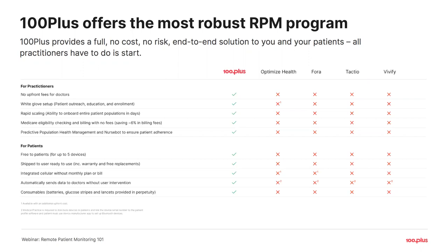Some devices require consumables — the blood glucose meter specifically. We cover all of those test strips and lancets, ship them directly to the patient, and refill them automatically based on the number of times per day they're testing their blood sugar. As batteries wear out, we take care of that too. And from time to time there's a slip-up with a device — it's dropped or run over with a car, whatever the case may be — devices are replaced at no additional cost ever.